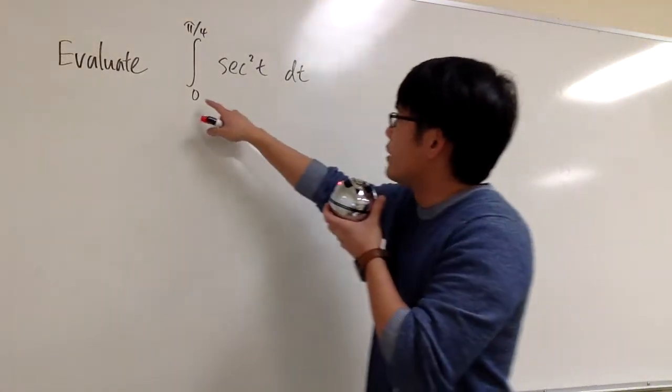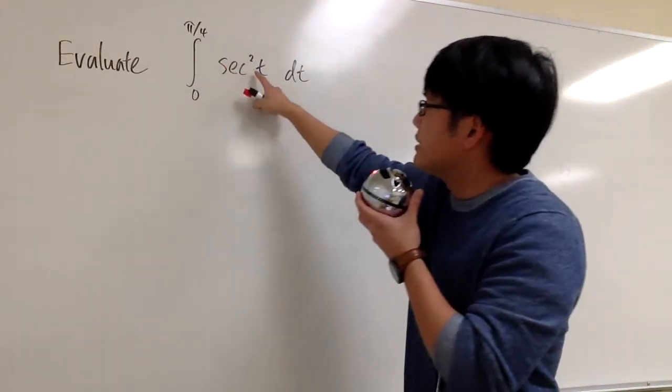Let's evaluate the integral from 0 to pi over 4 of secant squared t.